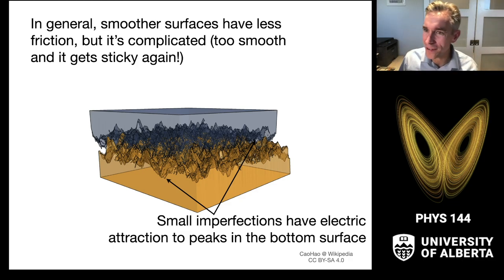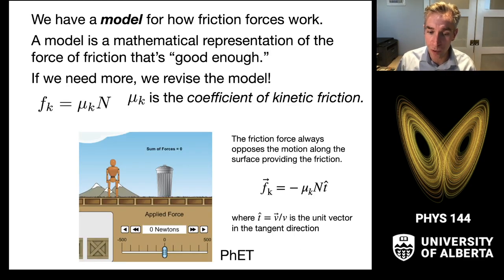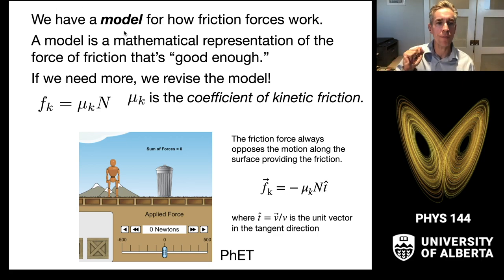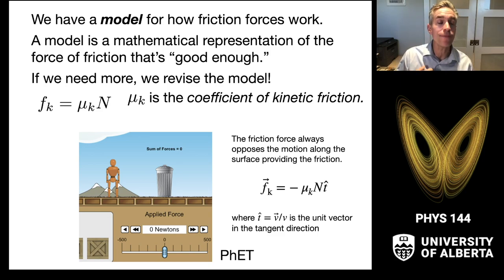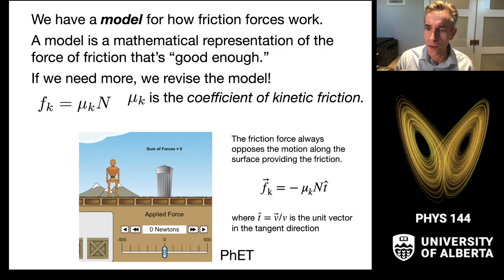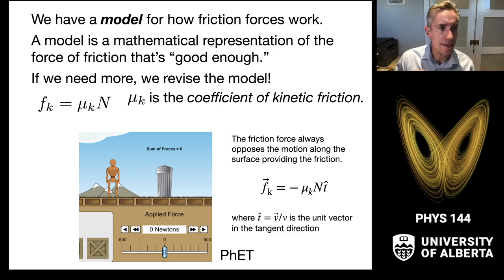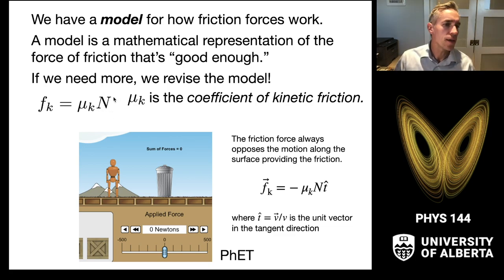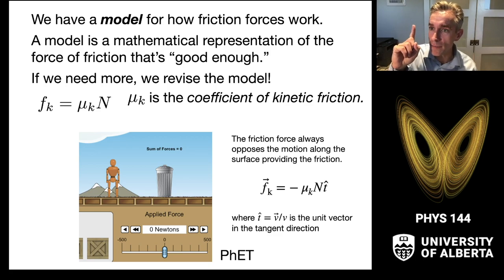We're not going to deal with super complicated models of friction — we're going to deal with a far simpler thing, and we're going to assert what we call a model. Models are a mathematical representation of how we're going to describe friction, and it is something that is good enough to give us interesting physics. The model we use is that the friction force is equal to some coefficient — just a number — times the normal force. That's basically how hard the object is pushing into the surface, which describes how hard the surface is pushing back, and therefore gives some scaling for how much friction force there is.